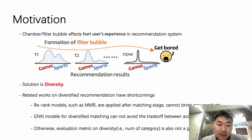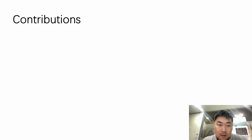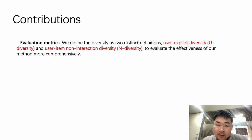Otherwise, evaluation metrics on diversity, like number of categories, is also not a good enough metric. Therefore, in this paper, we first propose new evaluation metrics U-diversity and N-diversity.